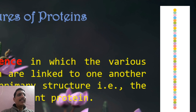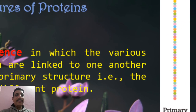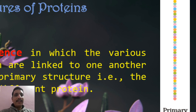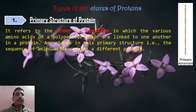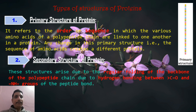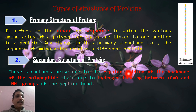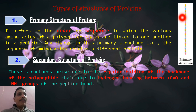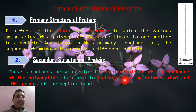In the diagram, the colored dots represent amino acids. N number of amino acids are joined together in a perfect order — that is the primary structure. The secondary structure of protein arises due to the regular folding of the backbone of the polypeptide chain. When that backbone folds regularly, we get the secondary structure.